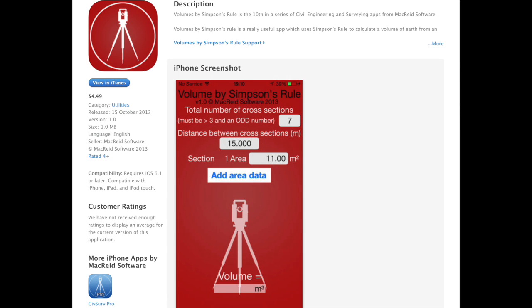Volumes by Simpson's Rule is a really useful app which uses Simpson's rule to calculate a volume of earth from an odd number of cross-sectional areas and the distance between the areas, which must be the same value.